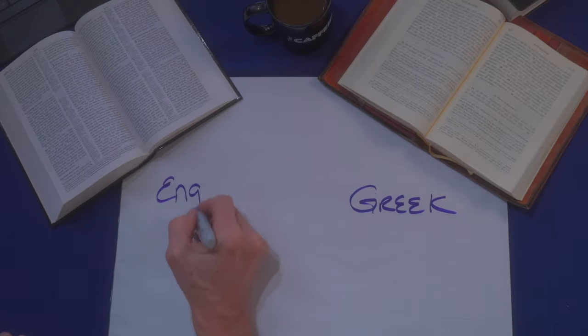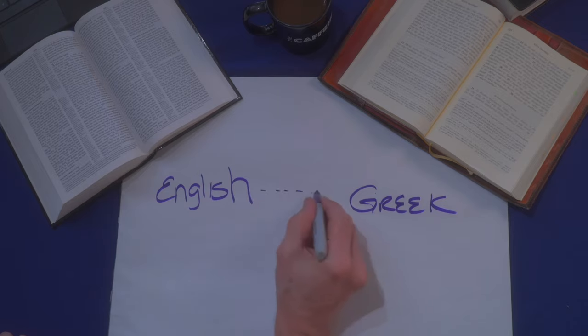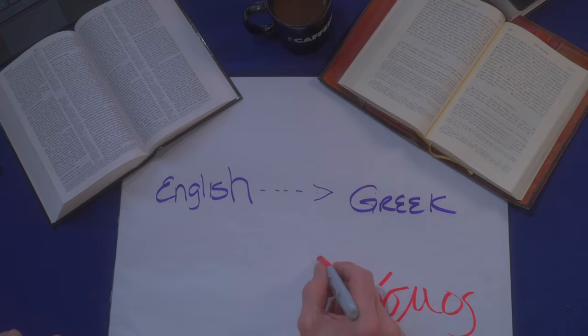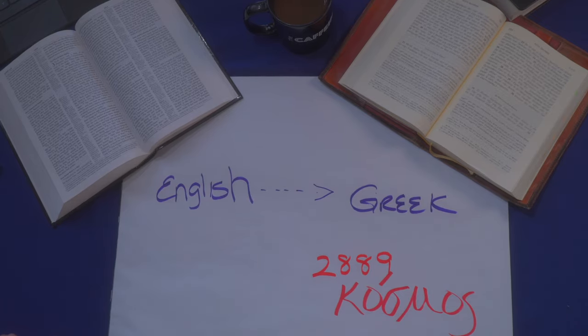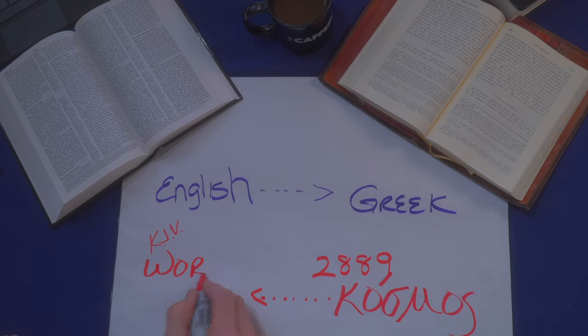The genius of Strong's Concordance was that by using a numbering system he was able to link the original Greek and Hebrew back to the English. Bible software takes that tagging idea and moves it to a whole new level.